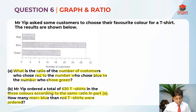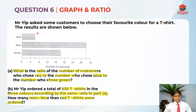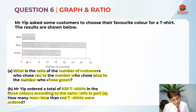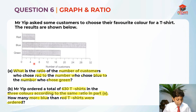Now we should analyse the graph. We should first find out what these small lines represent. We know the bigger lines, but what are the smaller ones? Since there are 2 gaps in between 0 and 4, we take 4 divided by 2, which gives us 2. So each gap is 2.